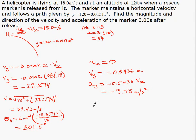So the resultant acceleration is going to be the square root of 0 squared plus negative 9.78 squared, which is 9.78.